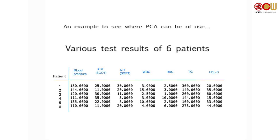Let's look at an example to see where PCA can be of use. This is a table of some tests a group of patients did at a hospital. For example, we have blood pressure — the blood pressure of patient 1 is 130, and patient 2 is 144. Similarly, this is the cholesterol level: for the first patient it stands at 20, and for the second patient it's at 35. We record the cholesterol level for each patient.